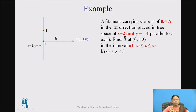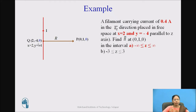What is the point of intersection Q when we draw a perpendicular from P (0, 1, 0) onto the filament? The point Q is (2, minus 4, 0). The X and Y coordinates come from the given filament position: X equals 2, Y equals minus 4. Since the filament is parallel to the Z axis, the Z coordinate remains common between P and Q, so the Z coordinate of Q is 0.